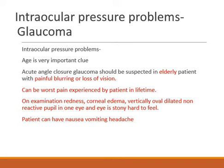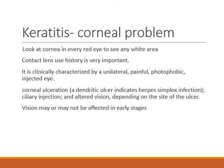The main clue for glaucoma is an elderly patient brought to the hospital with severe painful loss of vision associated with nausea, vomiting, and headache — this is the worst pain the patient may have experienced. On examination, the eye will be red, the cornea may be hazy due to corneal edema, the pupil will be vertically oval, semi-dilated, and non-reactive, and the eye feels stony hard.